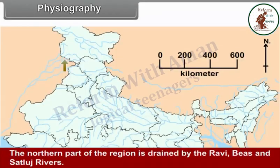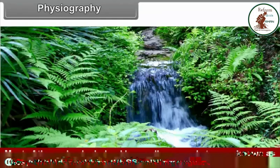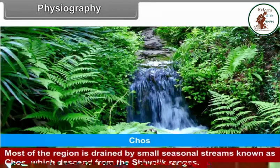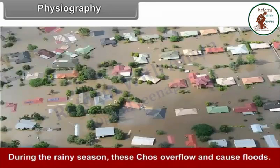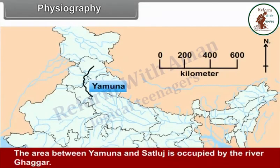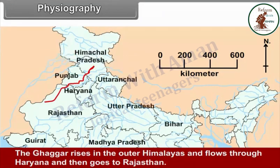The northern part of the region is drained by the Ravi, Beas and Sutlej rivers. Most of the region is drained by small seasonal streams known as choes, which descend from the Shivalik ranges. During the rainy season, these choes overflow and cause floods. The area between Yamuna and Sutlej is occupied by the river Ghaggar. The Ghaggar rises in the outer Himalayas and flows through Haryana and then goes to Rajasthan.